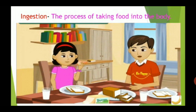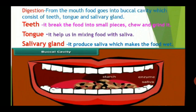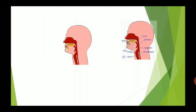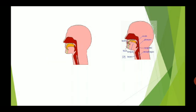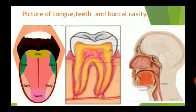Human beings have a mouth for the ingestion of food. From the mouth, the food goes into the buccal cavity. The buccal cavity contains teeth, tongue, and salivary glands. The teeth break the food; the tongue helps in mixing saliva with food and in pushing and swallowing the food into the food pipe. The salivary glands produce saliva, which contains an enzyme called amylase. Saliva also makes the food wet and slippery.